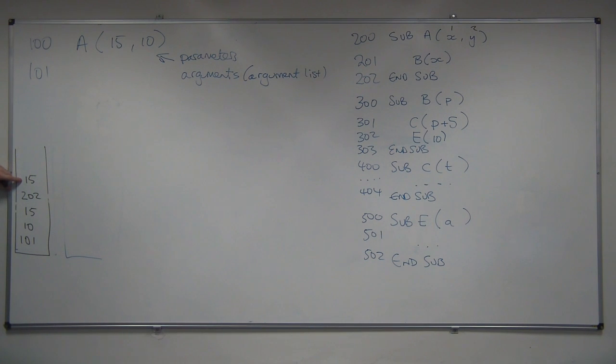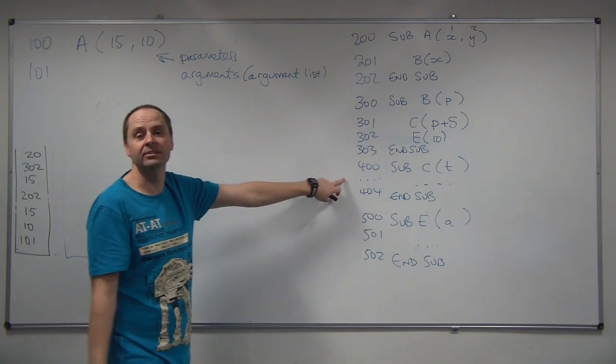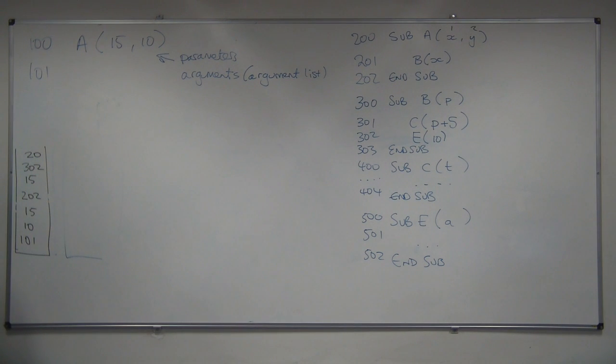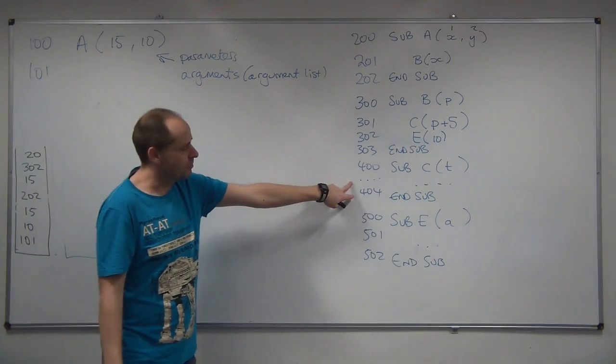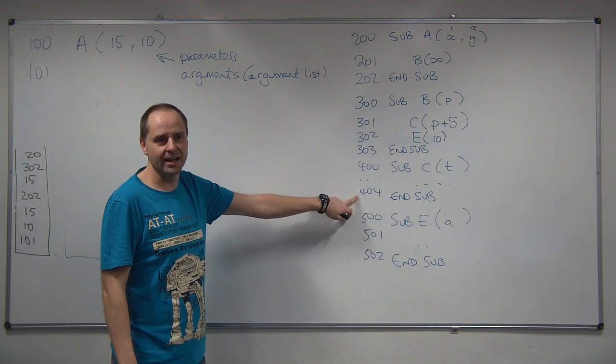But, we need to put the return address down first. 302. Then, we can put our value on. So, that's 20. Then, we can go off and run subroutine C, which is here. Which doesn't do anything. Some mysterious lines of code. And, then we get to this line. End sub. So, we return.